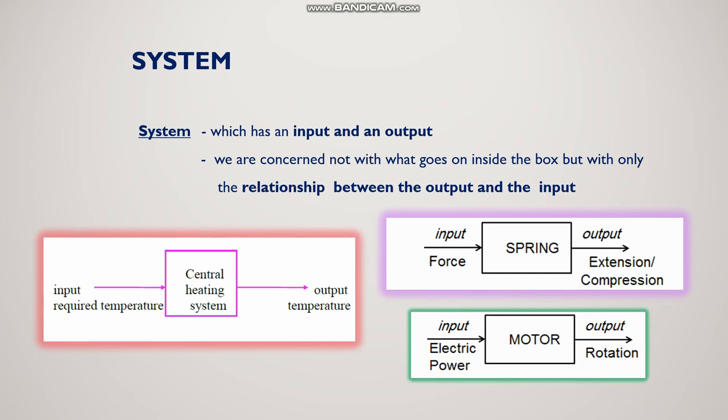When you give electric power to a motor — which has many components like stator and rotor — what you get as output is rotation of a shaft. So this is called a system.